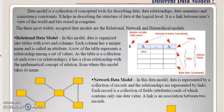The three most widely accepted data models are relational, network, and hierarchical. First is the relational data model. In this model, data is organized into tables with rows and columns. Each column has a unique name and is called an attribute. A row of the table represents a relationship among a set of values. The row represents the records of the table.